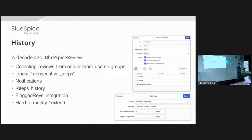Back then we had this extension called BlueSpice Review. It was a fairly linear thing, consisting of steps one after the other. A step could be assigned to a particular user, or later to user groups. There were notifications involved — users were notified about being in charge of doing something — and for auditing reasons we kept logs in the revision history. Over the years this extension grew and got harder to modify, and we had trouble fulfilling customization requests from our customers, so we decided to create something new.